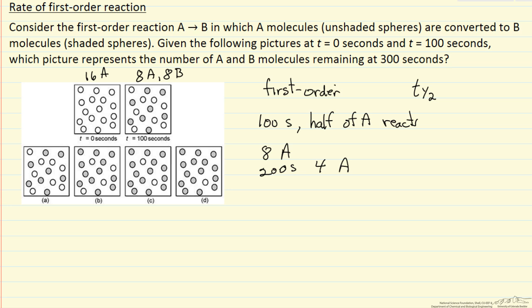So we have 4 molecules of reactant A, we run for another 100 seconds, so we're at 300 seconds, half of those react, so we have 2 molecules of A remaining at 300 seconds.